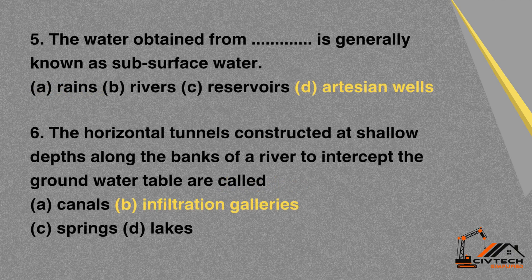MCQ 5: The water obtained from which source is generally known as subsurface water? A. Rains. B. Rivers. C. Reservoirs. D. Artesian wells. Correct option: D. Artesian wells.